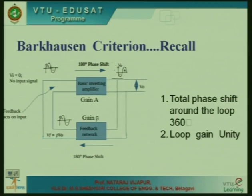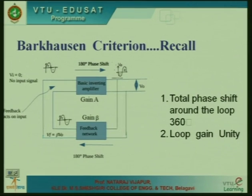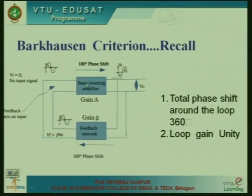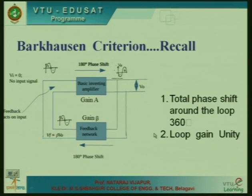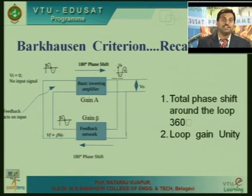To begin, let us revise the concepts of oscillators. We discussed Barkhausen criteria — for any electronic system to act as an oscillator, Barkhausen criteria must be satisfied. It states that the total phase shift around the loop should be 360 degrees and the loop gain should be unity.